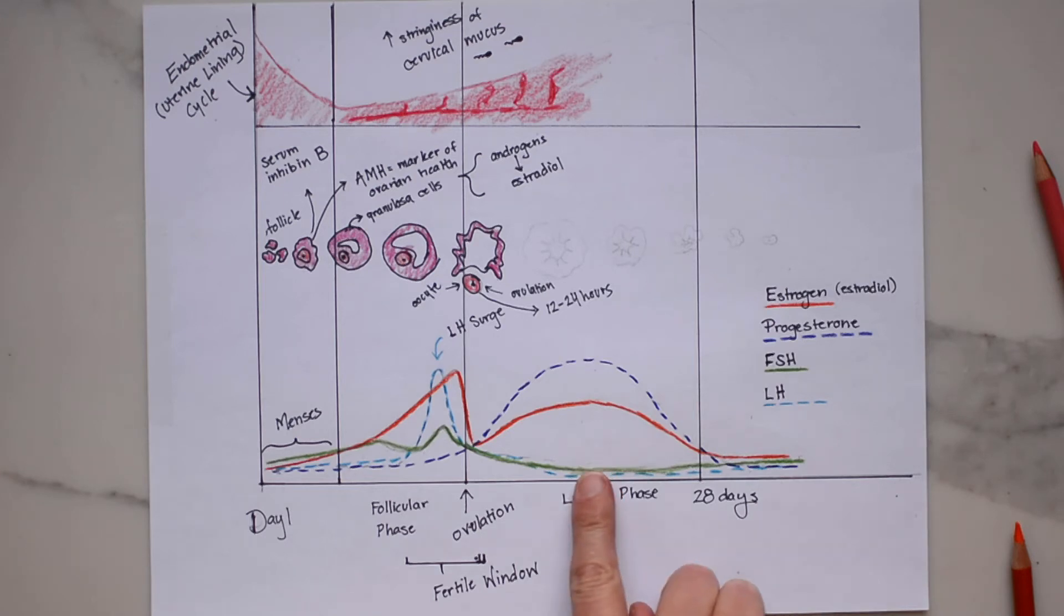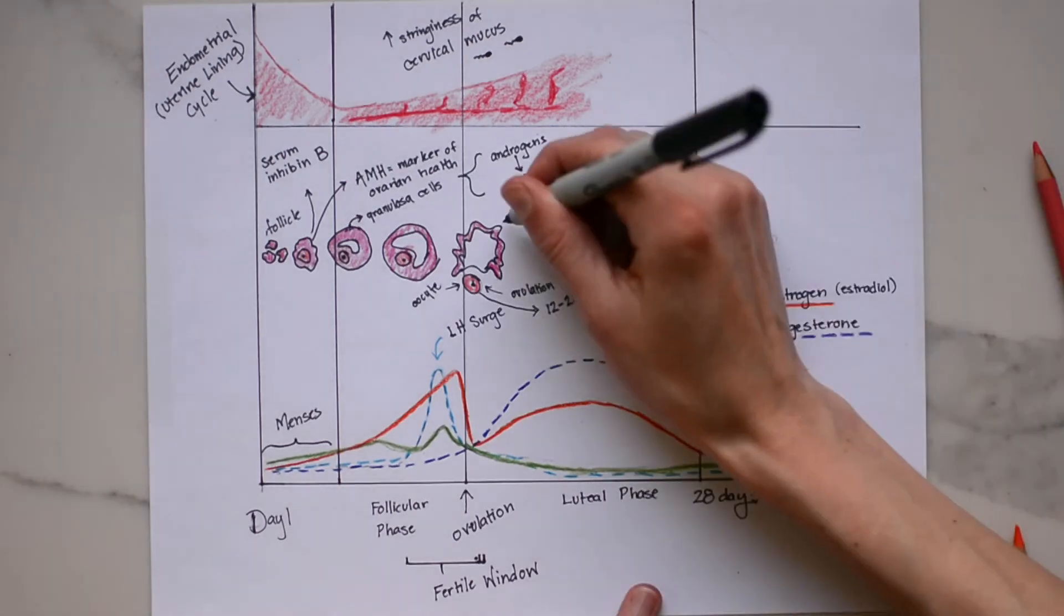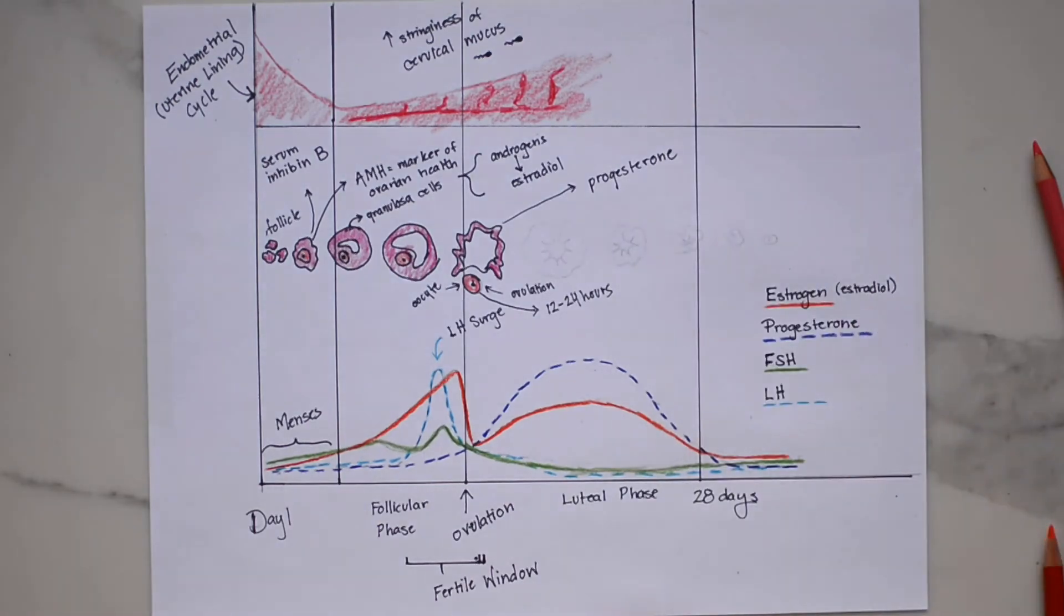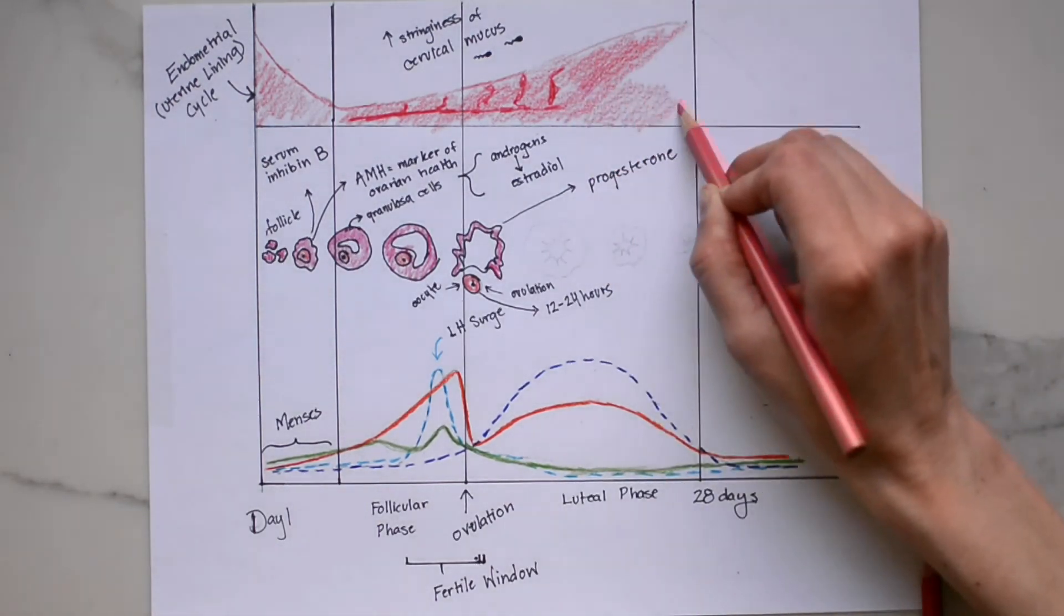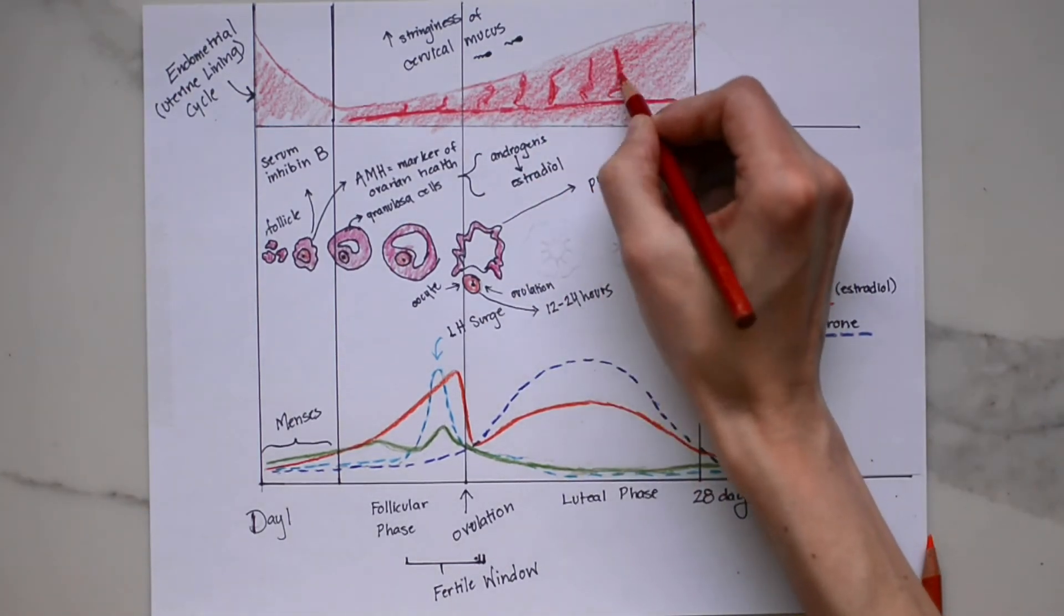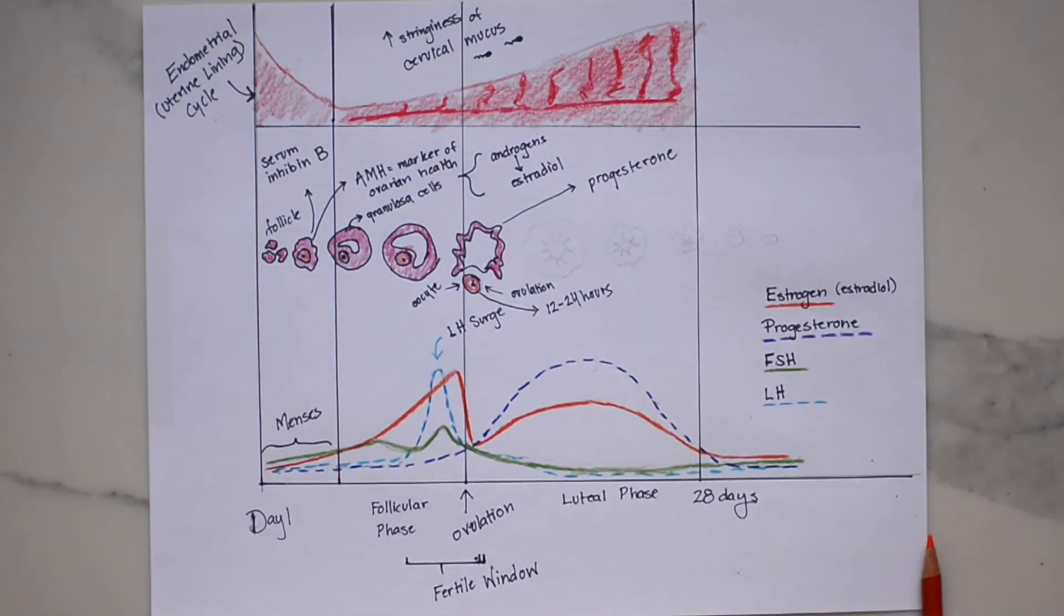Alright let's talk about the middle to late luteal phase. So even before the oocyte is released the granulosa cells begin to secrete progesterone and this is stimulated by LH. Progesterone is essential for making the lining of the uterus, the endometrium, optimal for implantation of the fertilized egg. In some women they experience a reduction in progesterone in the luteal phase and this can sometimes be referred to as a luteal phase defect.